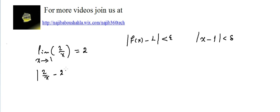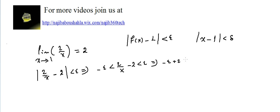In this case, the absolute value of 2 over X minus 2 is less than epsilon, which means minus epsilon less than 2 over X minus 2 less than epsilon. Adding 2 to each side gives: minus epsilon plus 2 less than 2 divided by X less than epsilon plus 2.